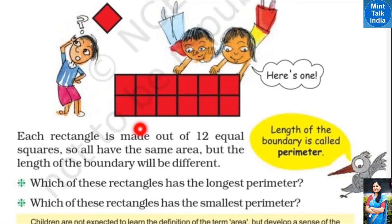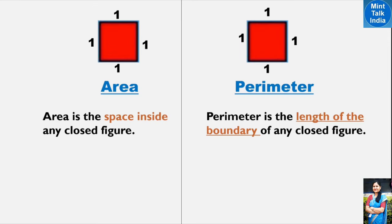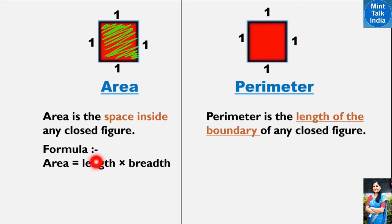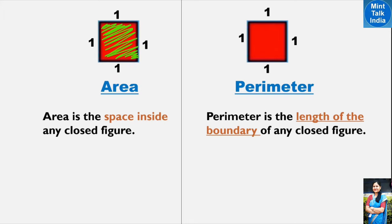Each rectangle is made out of twelve equal squares, and all these squares have sides of one centimeter, so they all have the same area. Area is the space inside any closed figure. Any shape made out of twelve such squares will occupy the same amount of space. For a square, since all four sides are equal, the length and breadth are the same, so we can write: area = side × side.